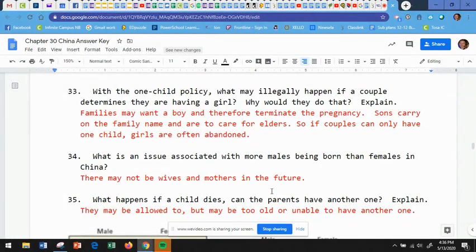Number 33, with the one child policy, what may illegally happen if a couple determines they're having a girl? And why would they do that? Explain. Now this one is really tricky and it's sometimes hard for us to really think about. So many families may want a boy. And therefore they may terminate the pregnancy. They may not want that child to live because sons are the ones who are in charge of the family name. Just usually like here in the United States, if your last name is Smith, and you're a man, that's the name that you keep. And that when you get married for women, you take the name Smith or whatever. And then the children's name is Smith. Now that's not necessarily always true, but that's usually the way it goes. Sons are also in charge of caring for elders. So many couples, especially if they're not very wealthy and can really only have one child, they know by the policy, they would prefer to have a son. So what happens oftentimes, if couples can only have one child, the girls are often abandoned, which is why there's a high number of girls in China that are available for adoption.